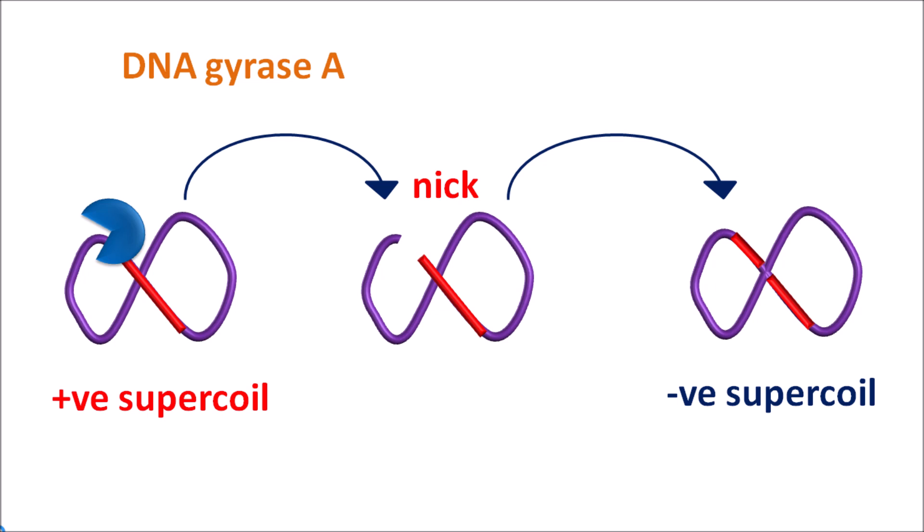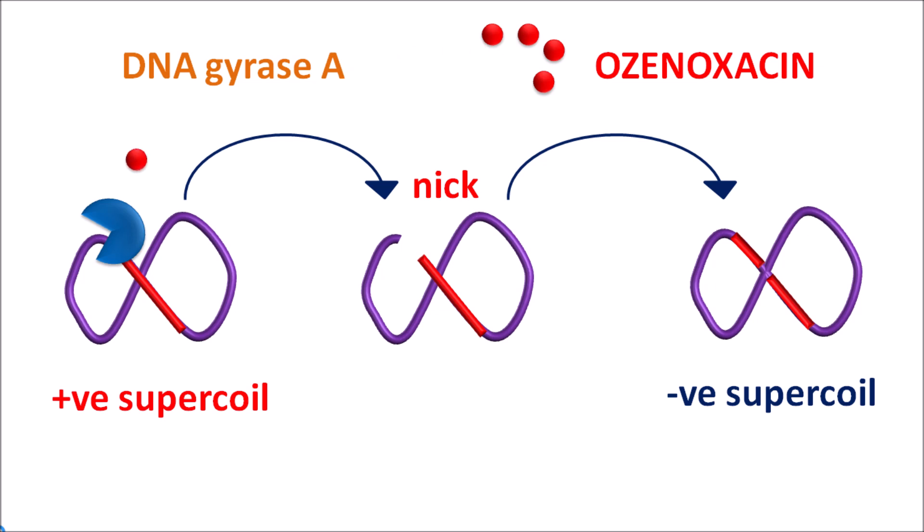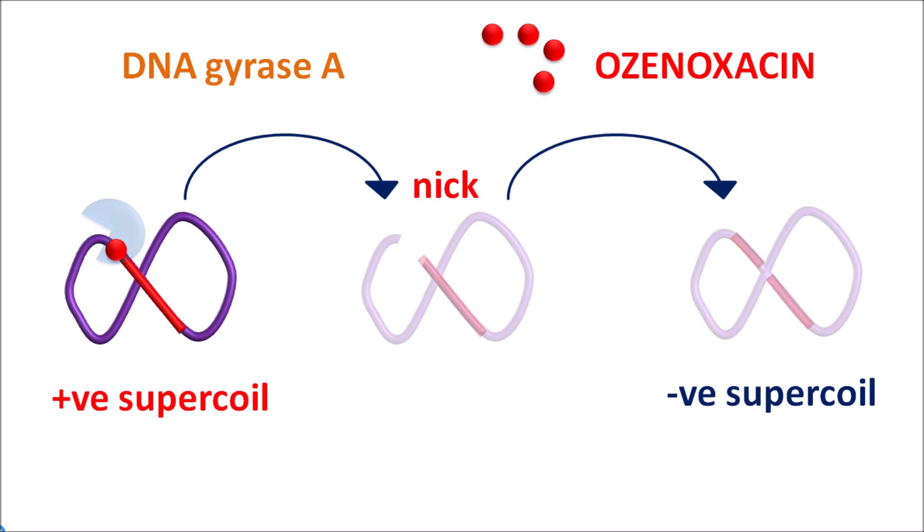Among these three steps, the first step — DNA strand breakage by DNA gyrase enzyme — is most important. This step is blocked by ozenoxacin. Ozenoxacin blocks the DNA gyrase enzyme such that it cannot form any nick in the DNA, thereby inhibiting the formation of the negative supercoil. This inhibits DNA replication and bacterial growth, so ozenoxacin can reduce bacterial infections.